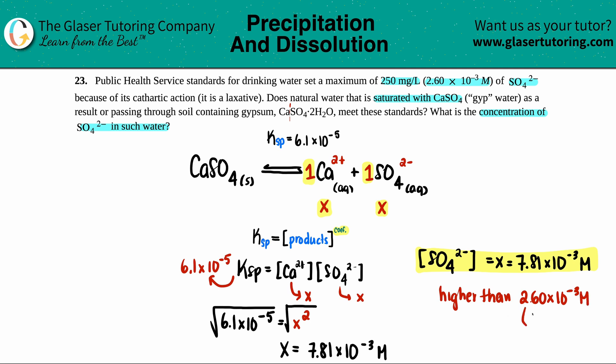And keep in mind that that is the standard. That's the max number, the maximum that should be in that water. So it says, does the natural water that's saturated with the calcium sulfate meet these standards? So the answer is no, it does not meet these standards. It's way too high and cesspools are going to be filling up.